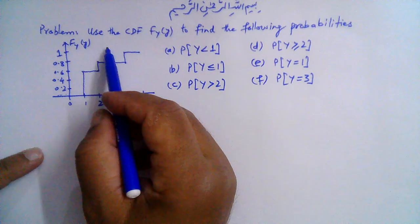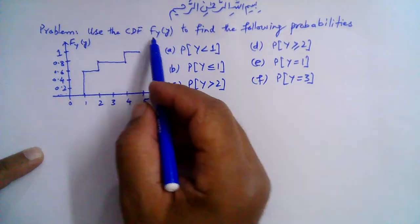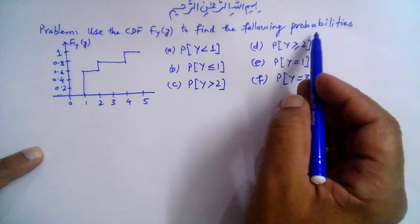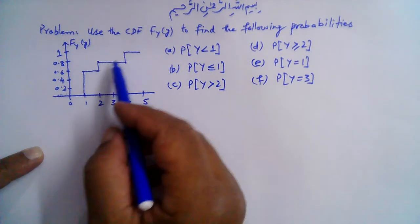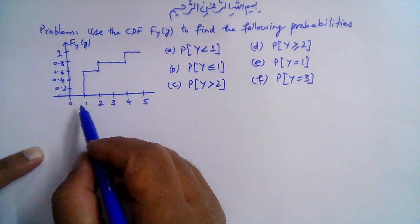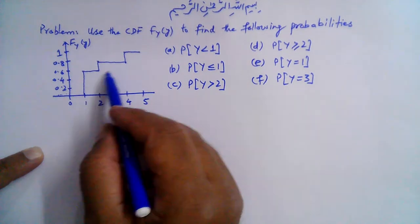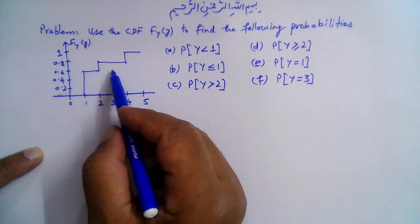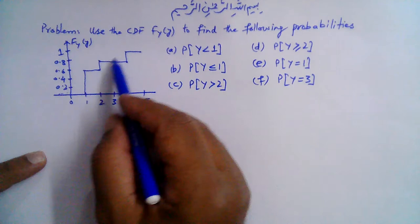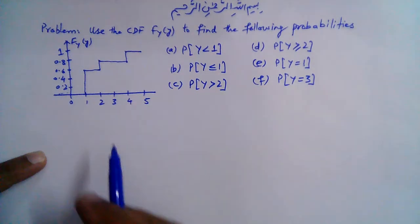Bismillahirrahmanirrahim. Use the CDF F_Y to find the following probabilities. This is the CDF that we are given. As we know, the CDF is a monotonically increasing function.